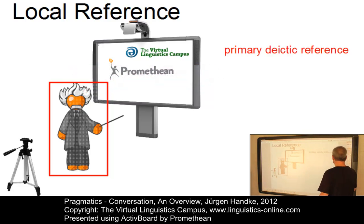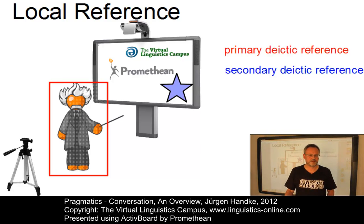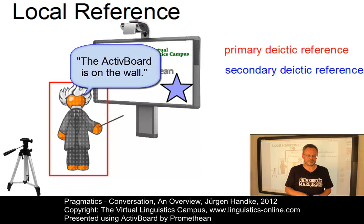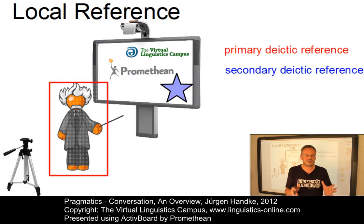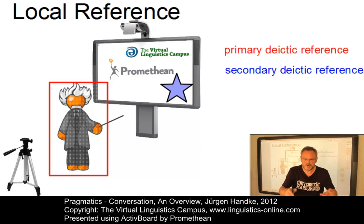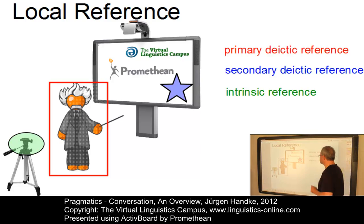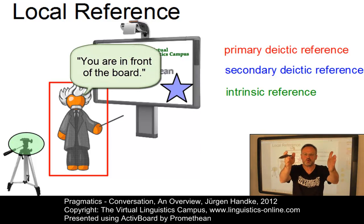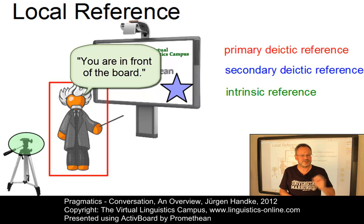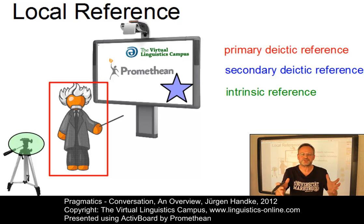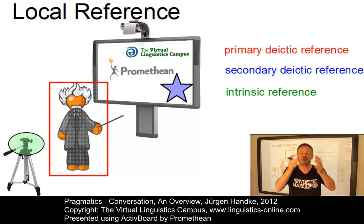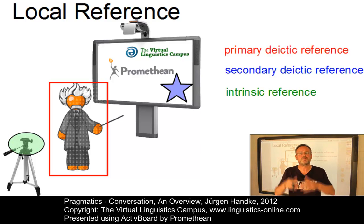With the reference type referred to as secondary deictic reference, I would say the active board is on the wall. This secondary deictic definition uses the speaker as the origin of the coordinate system, but the reference point is now any other object — here, the wall. The third type is referred to as intrinsic reference, and now I would say you are in front of the board. This intrinsic definition uses an external addressee as the origin of the coordinate system, and the reference point is any other object — so the origin is your position, and the reference point is the board.